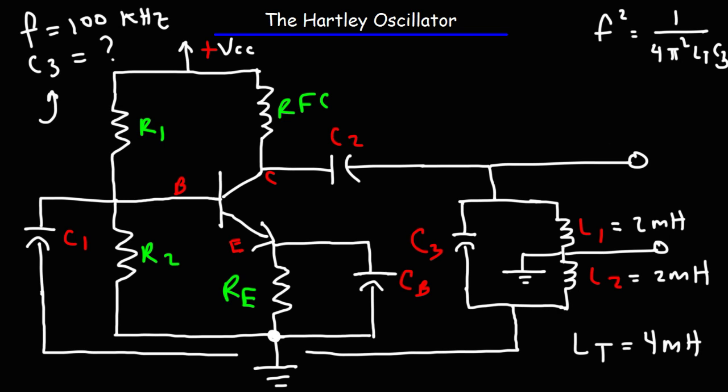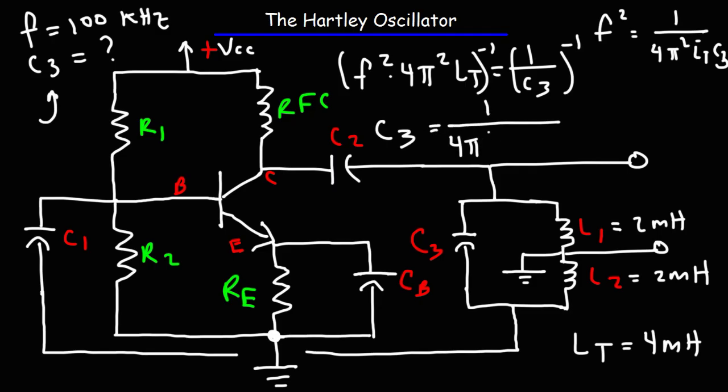So what I'm going to do now is multiply both sides by 4π² times LT. So you get F² times 4π²LT is equal to 1 over C3. Then raising both sides to the minus 1, you get that C3 is equal to 1 over 4π²F²LT.